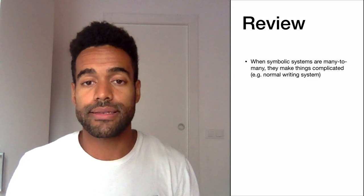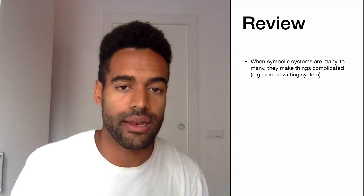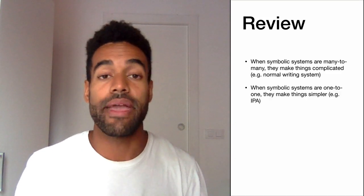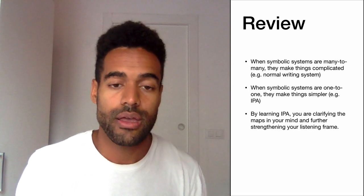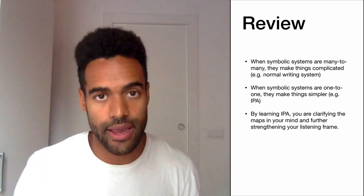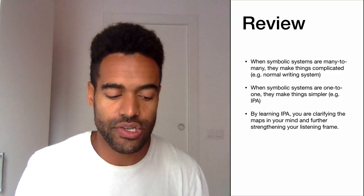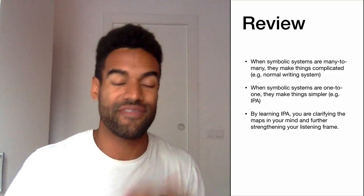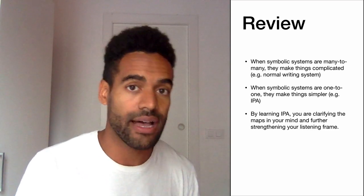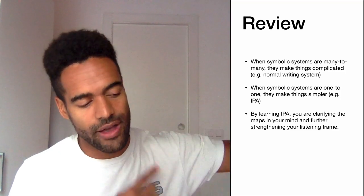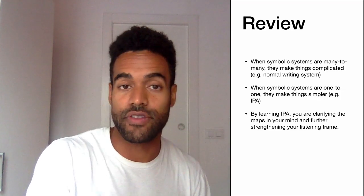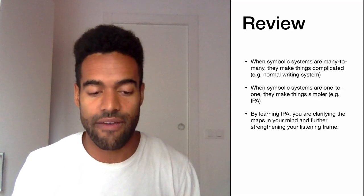To review: when symbolic systems are many-to-many, they make things complicated — such as the normal orthography system in English and Spanish. But when these systems are one-to-one, they make things simpler, as is the case with IPA. By learning IPA, you are clarifying the maps in your mind and further strengthening your listening frame. The goal is to feel comfortable with every symbol, every name, and every sound — and you're also synthesizing everything you've learned in the previous lessons of this module as well as module four. Have fun with it, and let us know if you have any questions.